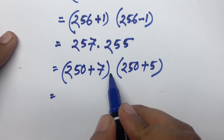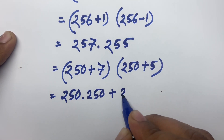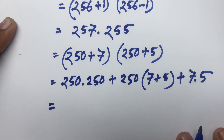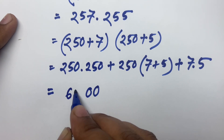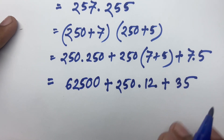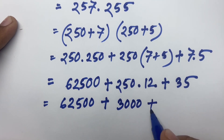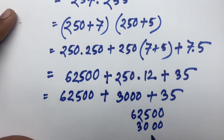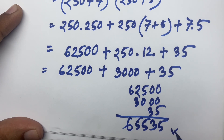Now I multiply 250 plus 7 and 250 plus 5. I can say: 250 times 250, plus 250 times 7, plus 5 times 250, plus 7 times 5. We know 250 times 250 equals 62500, plus 62500, plus 250 times 12 equals 3000, and 35. Adding these together gives 65535. This is the answer. If you enjoy this video, please subscribe to my channel. Goodbye.